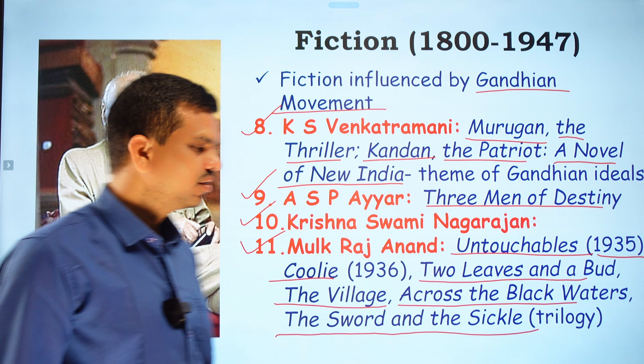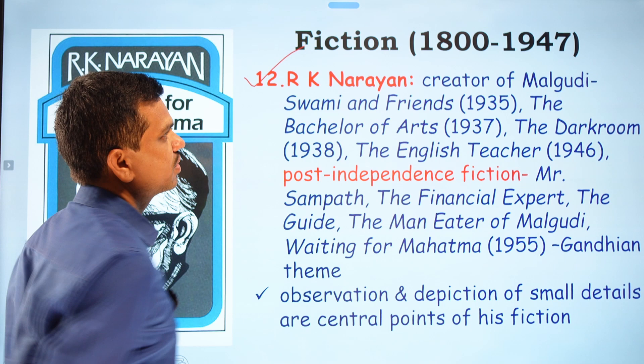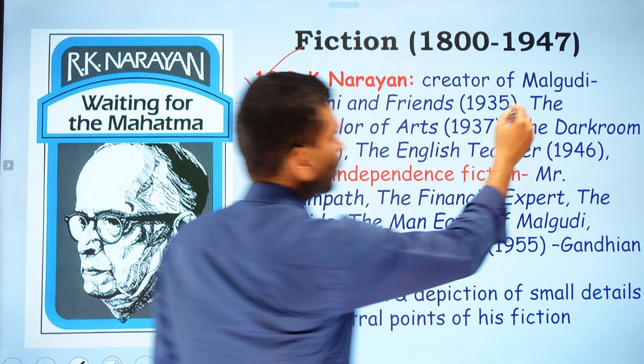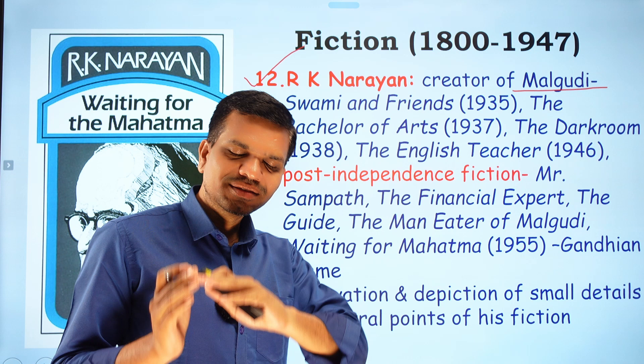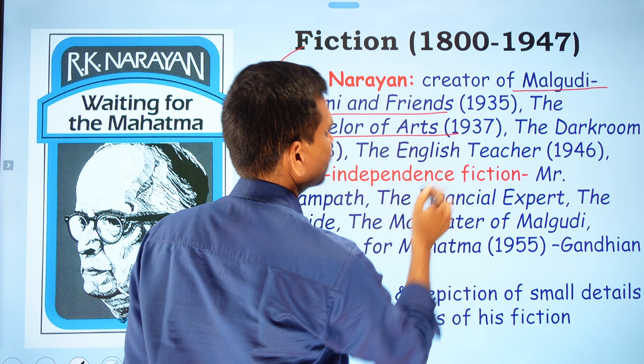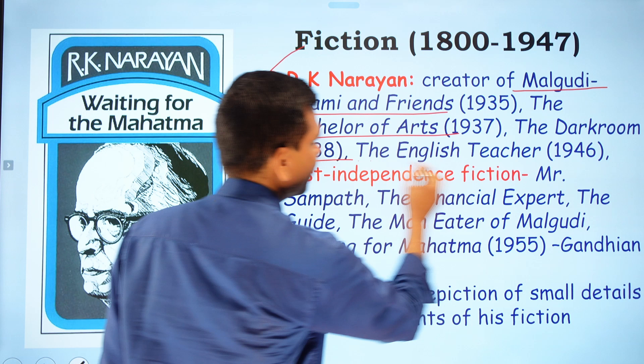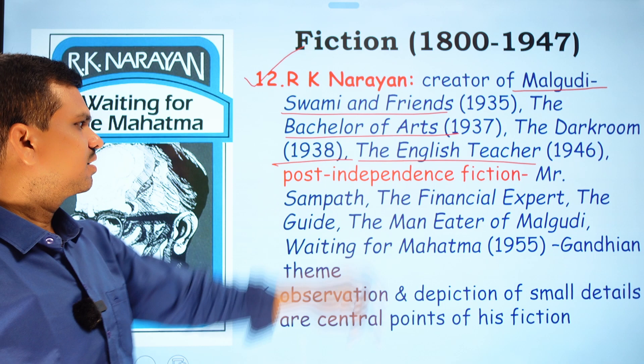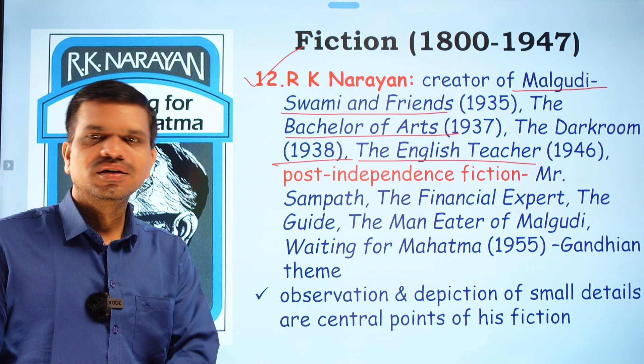R.K. Narayan is a very famous novelist and creator of the fictional town Malgudi, an imaginary town in South India. His pre-independence novels include Swami and Friends (1935), The Bachelor of Arts (1937), The Dark Room (1938), and The English Teacher (1946).